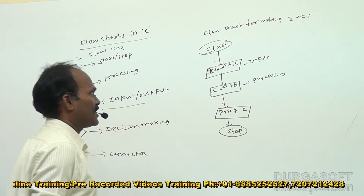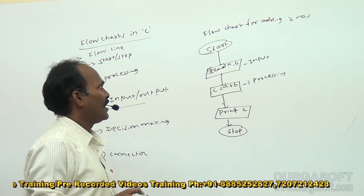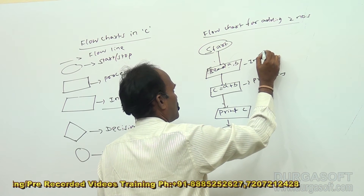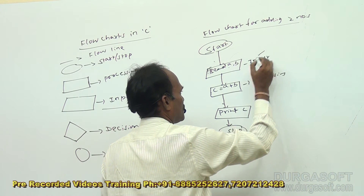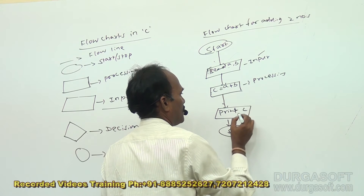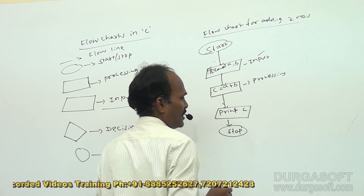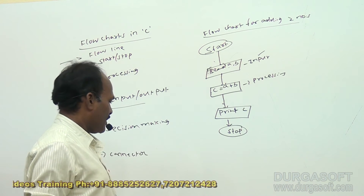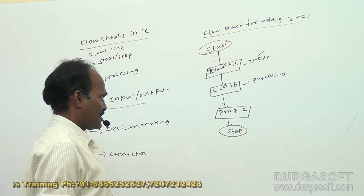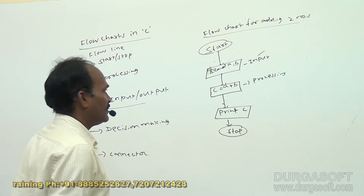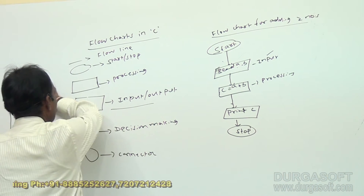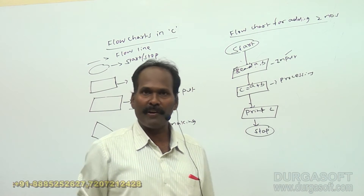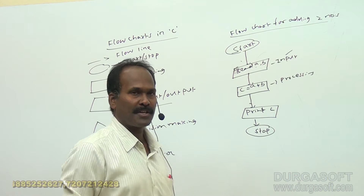This is a small flowchart for adding two numbers. It is going to ask two numbers from the keyboard, calculate the sum, and finally display the sum value in the form of C. We stop the flowchart using the stop symbol. Whenever the requirement comes, I will explain particular programs in the form of flowcharts.